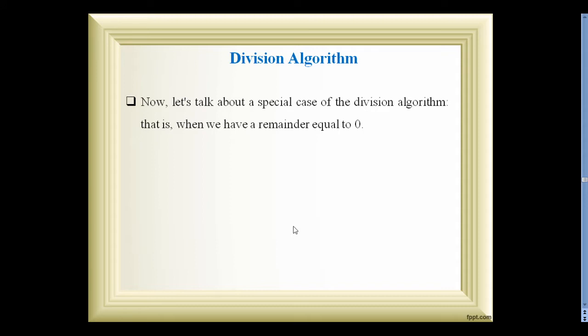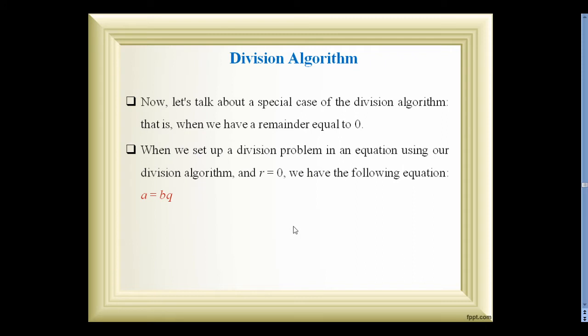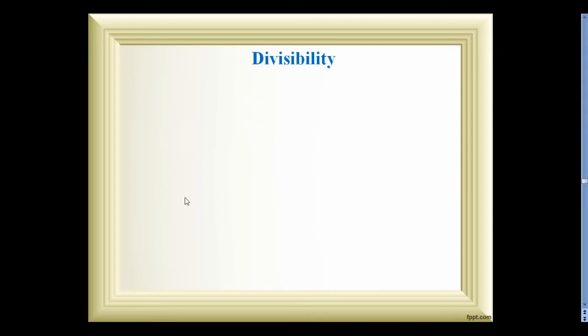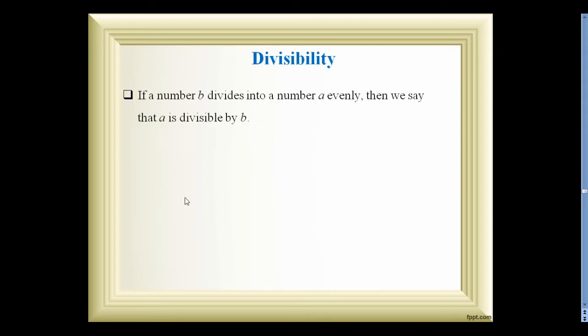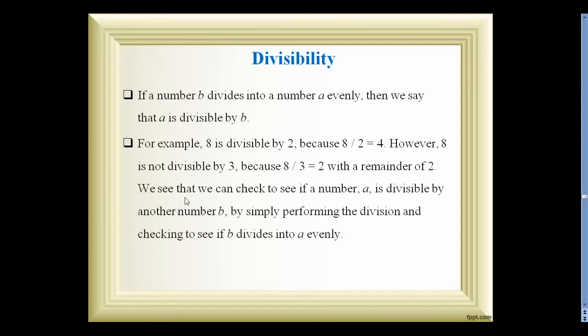Now let us talk about special cases of the division algorithm. When the remainder r equals 0, the equation a = bq + r becomes simply a = bq. So for divisibility, if a number b divides into a number a evenly, we write that a is divisible by b. For example, 8 is divisible by 2.